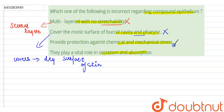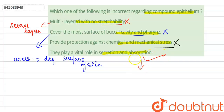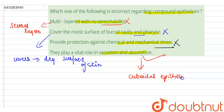Compound epithelium also provides protection against chemical and mechanical stress, so this statement is also correct and is an incorrect option. The option stating they play a vital role in secretion and absorption is the correct answer, because this statement is incorrect — compound epithelium does not play a role in secretion and absorption.